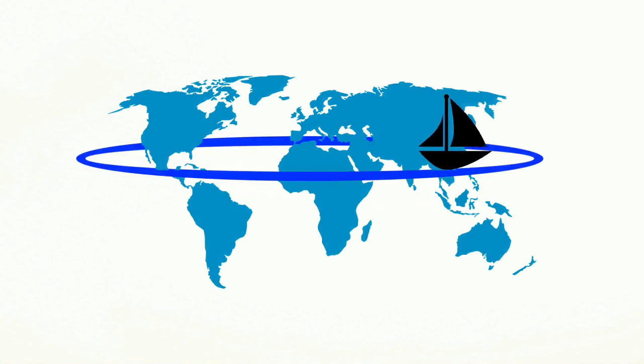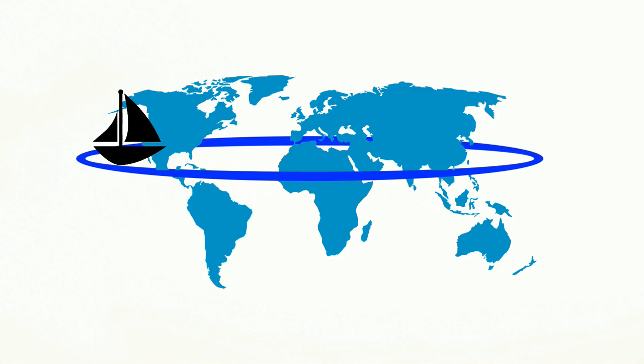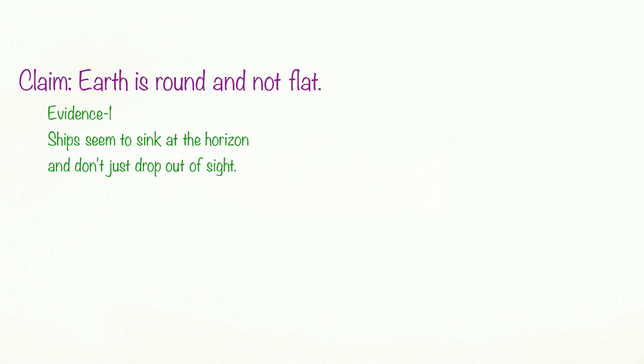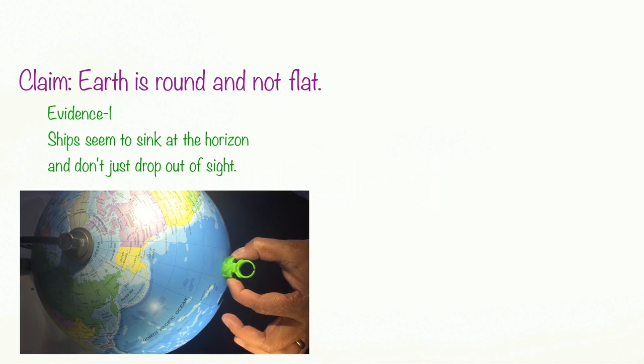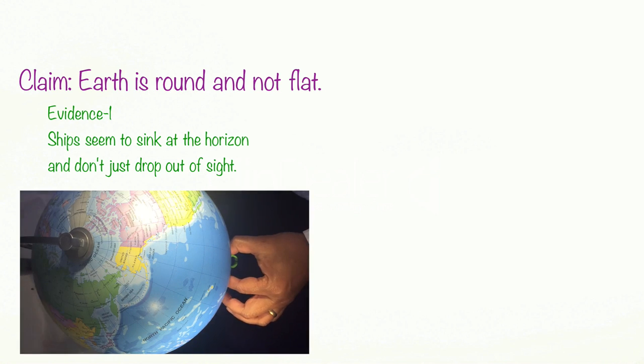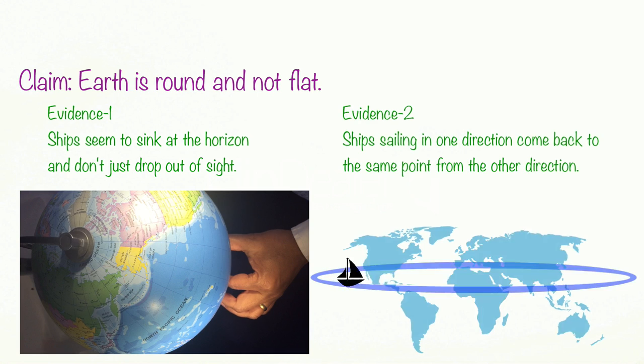Also, ships sailing east or west come back to the place they started. Here, the claim being made is that Earth is round and not flat, and in support of this claim, the evidence being provided is ships seem to sink at the horizon and don't just drop out of sight, and ships sailing in one direction come back to the same point from the other direction.